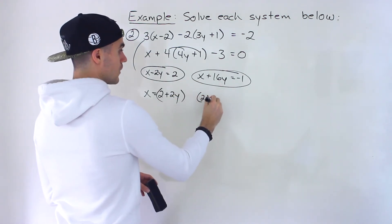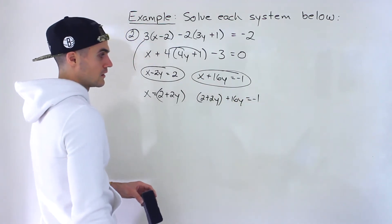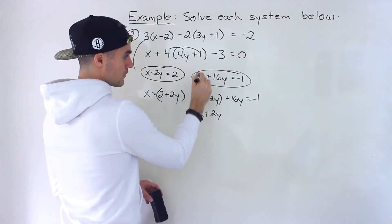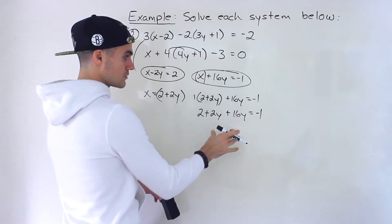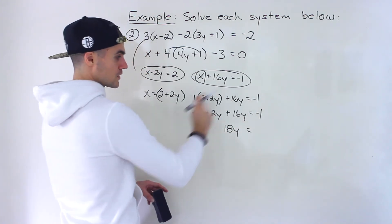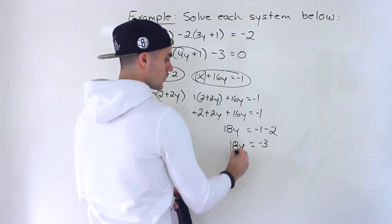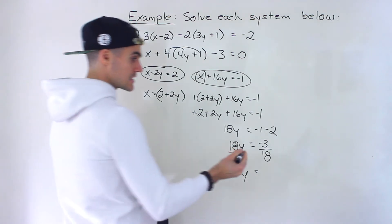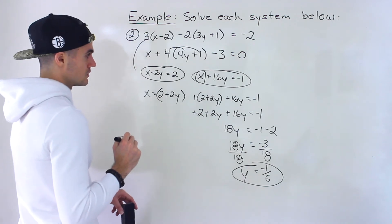Substituting: (2 plus 2y) plus 16y equals negative 1. There's effectively a 1 in front of the bracket so we can remove it. 2y plus 16y is 18y. The positive 2 comes over as negative 2: 18y equals negative 3. Dividing both sides by 18, y equals negative 3 over 18, which simplifies to negative 1 over 6. In this case we get a fraction solution.